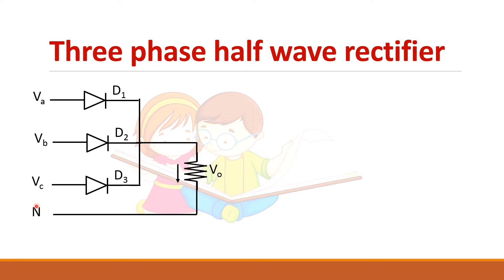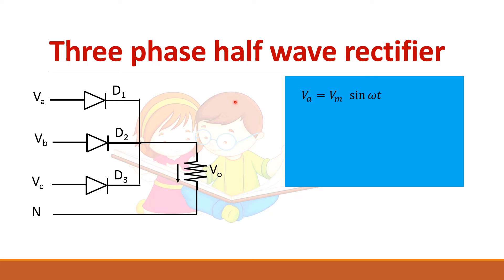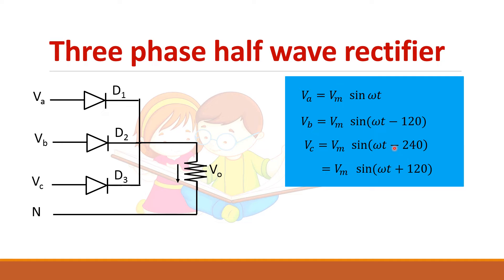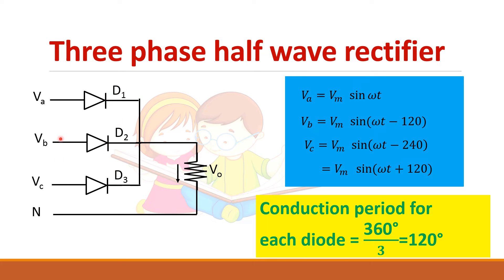Let us see the voltage equations. VA = VM sin(ωt), VB = VM sin(ωt − 120°), and VC = VM sin(ωt − 240°), which can also be written as VM sin(ωt + 120°). So each phase differs by 120°. With 3 diodes and a total cycle of 360°, dividing 360° by 3 gives 120°, so each diode will conduct for 120°.